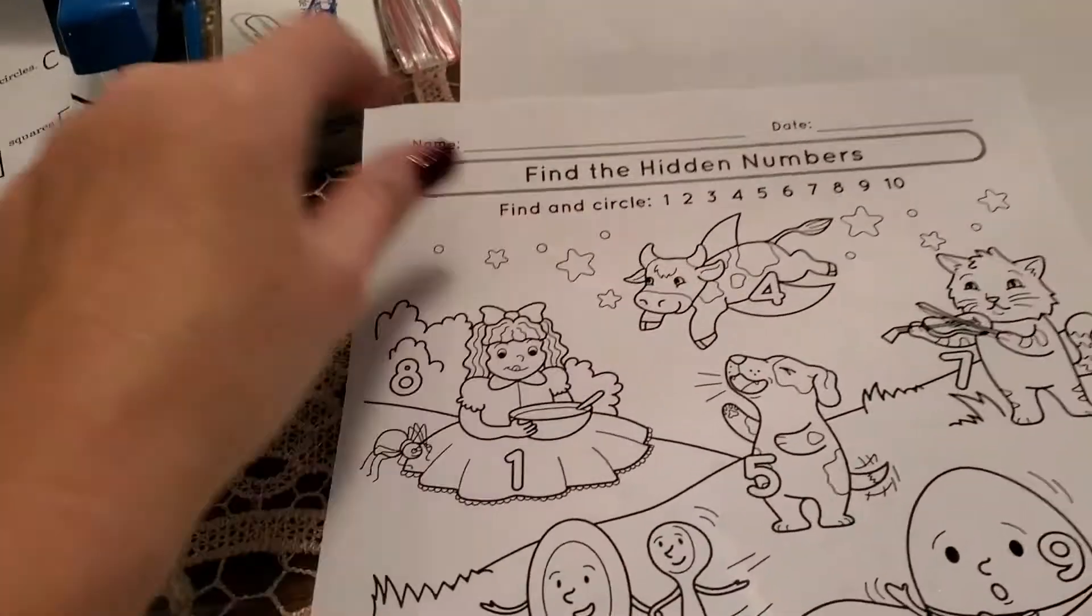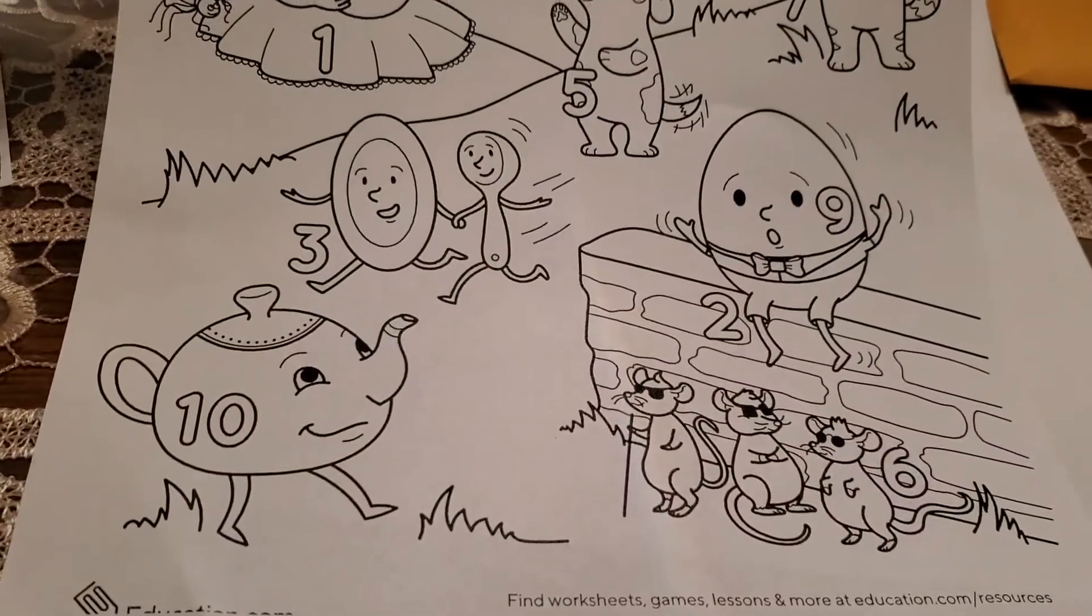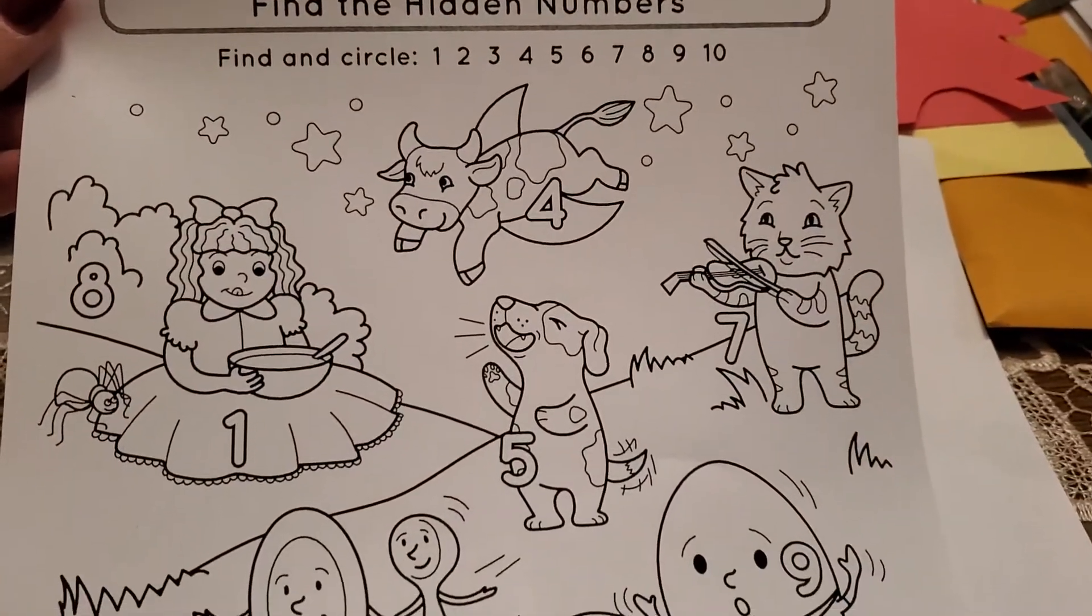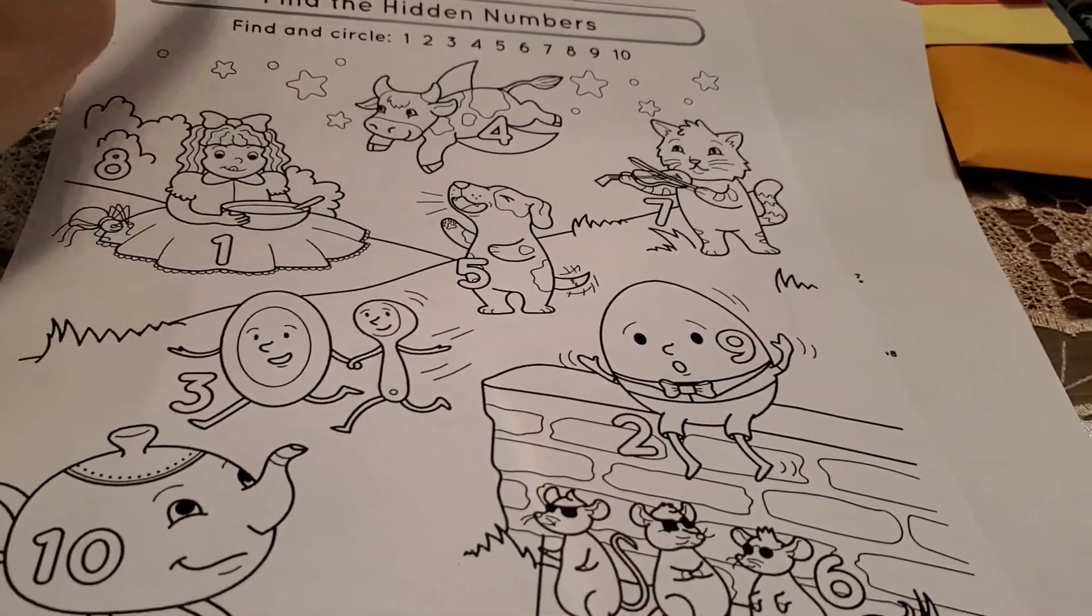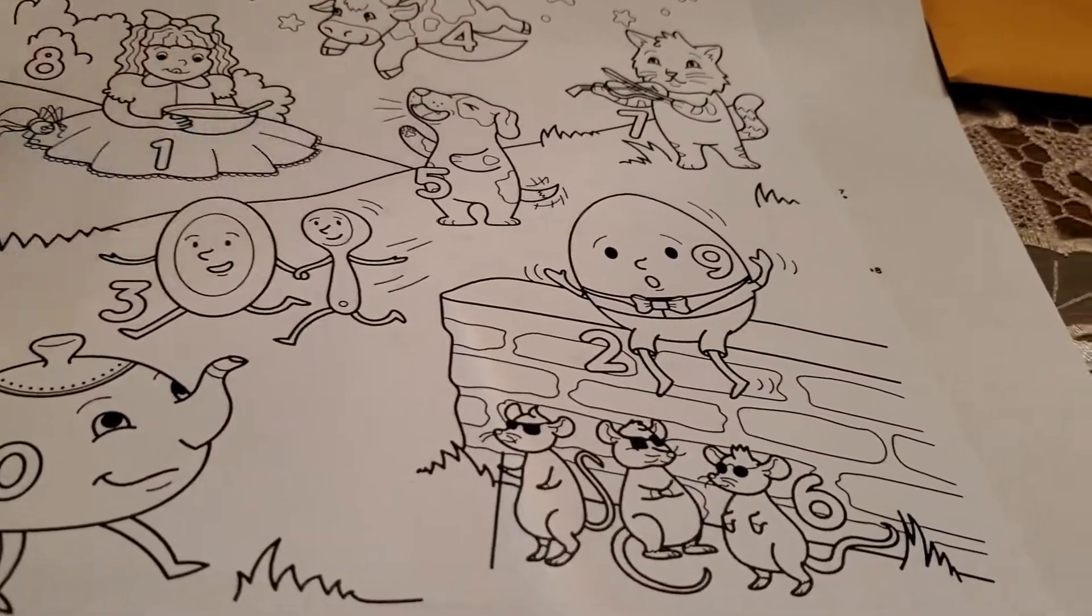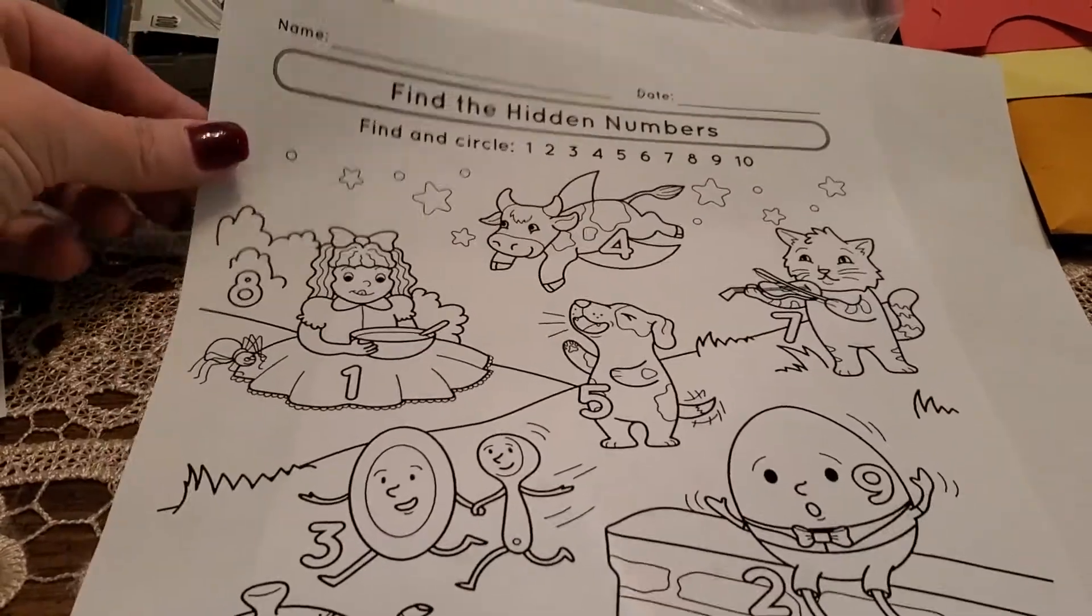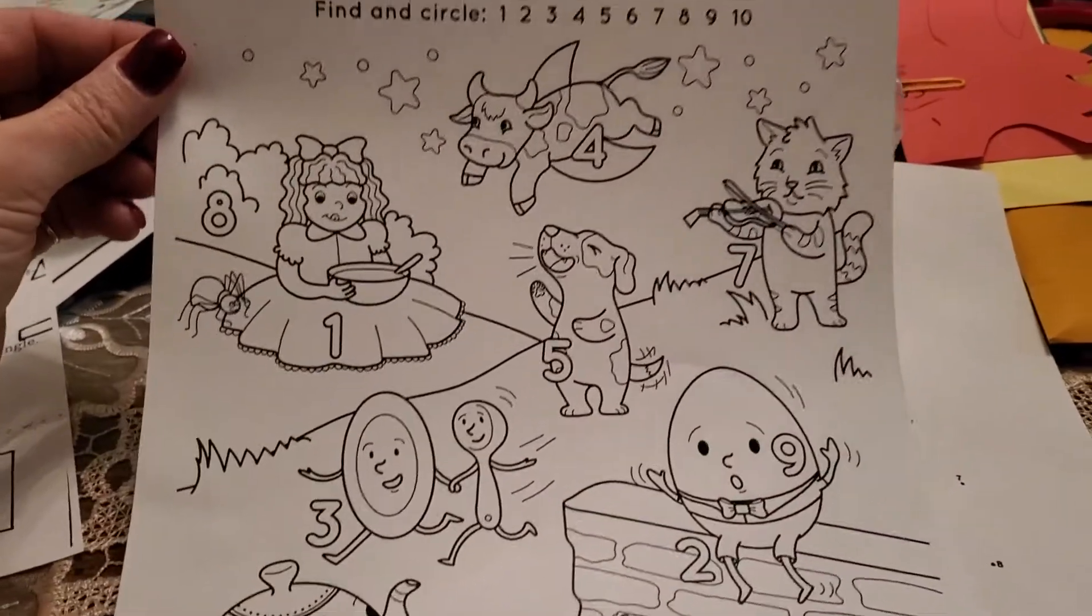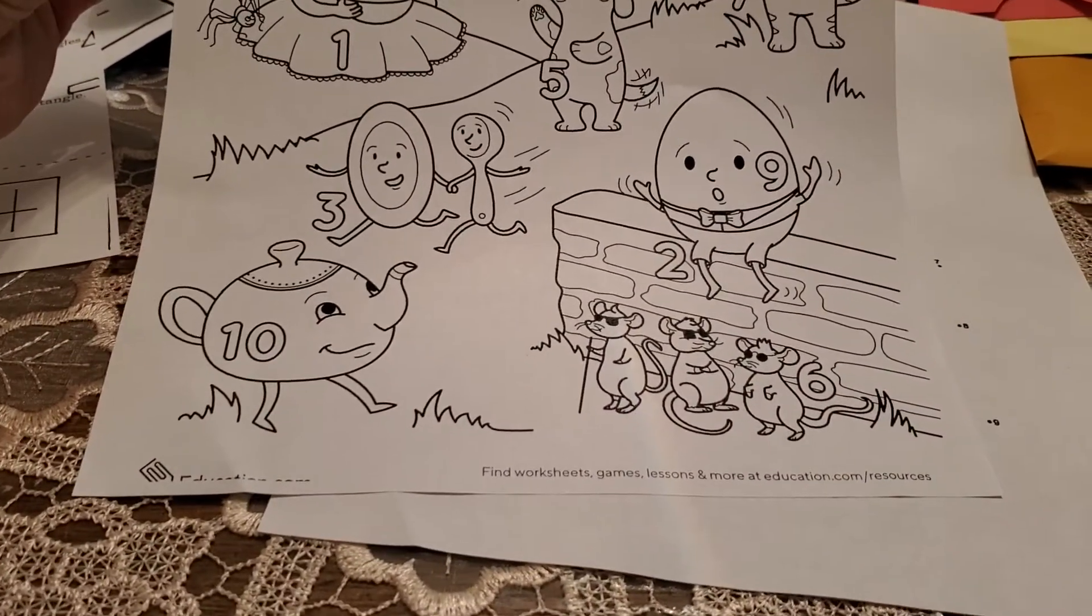Okay, this is one sheet. Find the hidden numbers. Now there's numbers all over the place, and I know you can see them. And what you have to do is you have to find and circle. If you find the four, you have to circle the four. If you find the one, you have to circle the one. If you find the three, you have to circle it. And then I want you to make sure you color it, boys and girls. I want you to color it very, very nicely.